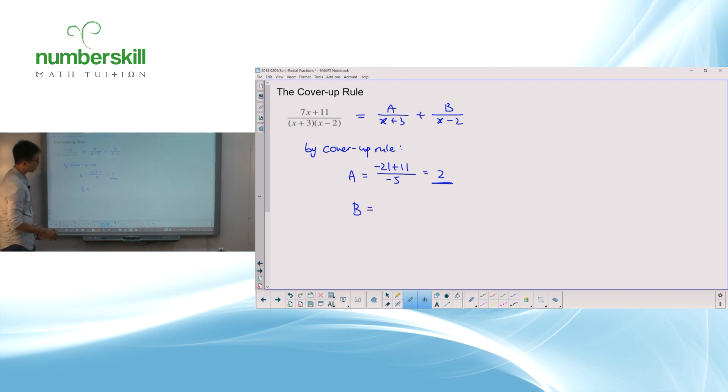How about B? How to find B? So very easy. You see, I'm going to substitute x equal to 2 inside here. So 2 times 7, 14, right? 14 plus 11. And I'm going to put 2 inside here. And you get 5. And that's going to give me 25 divided by 5, which is 5. That's my A and B. Done.